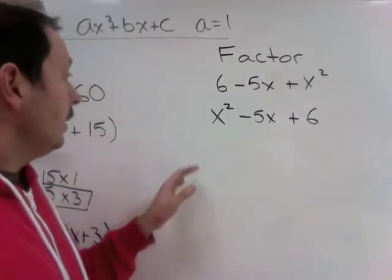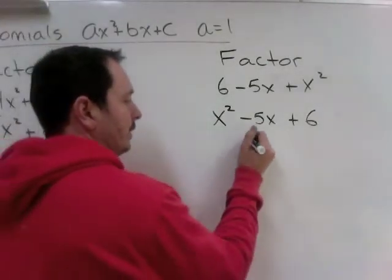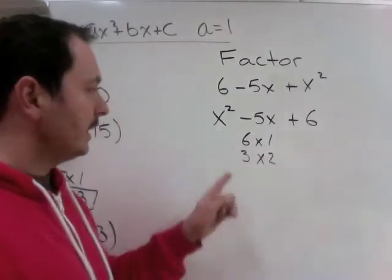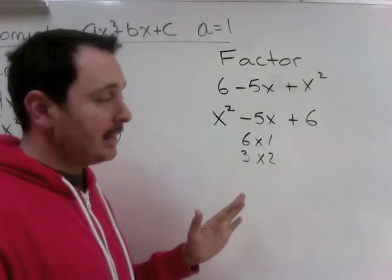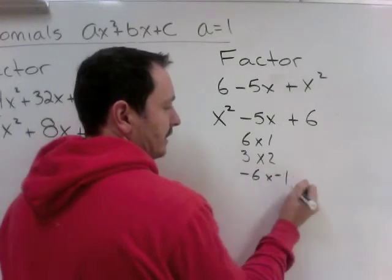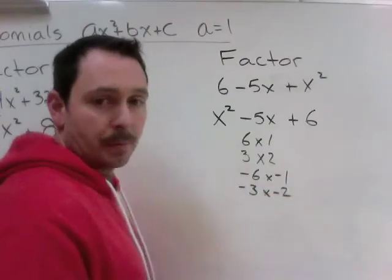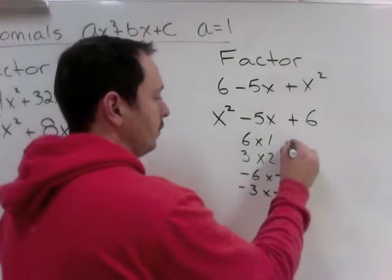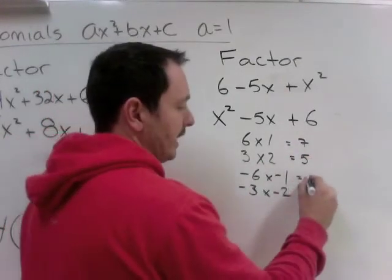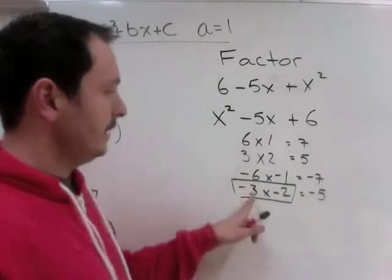Now, what we're going to do here is what multiplies to 6 and adds to negative 5? Well, 6 is 6 times 1 and 3 times 2. But, neither of these add to 5. The reason is because 6 could also be negative 6 times negative 1, because two negatives make a positive, or negative 3 times negative 2. Now, let's add. 6 and 1 would be 7. 3 and 2 would be 5. Negative 6 minus 1 is minus 7. Minus 3 minus 2 is minus 5. And that is my b value.